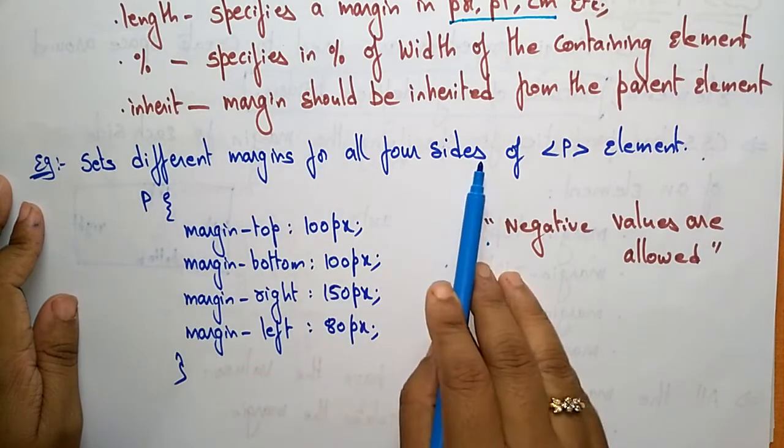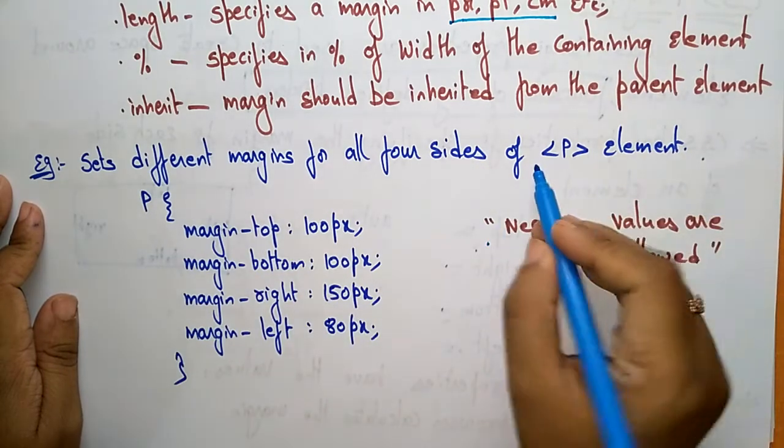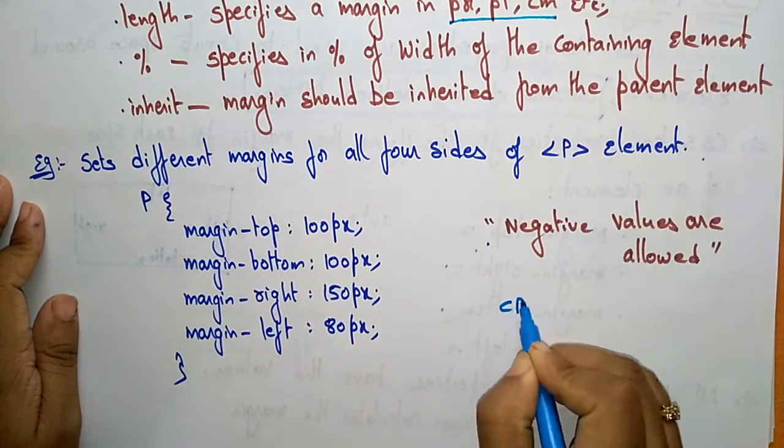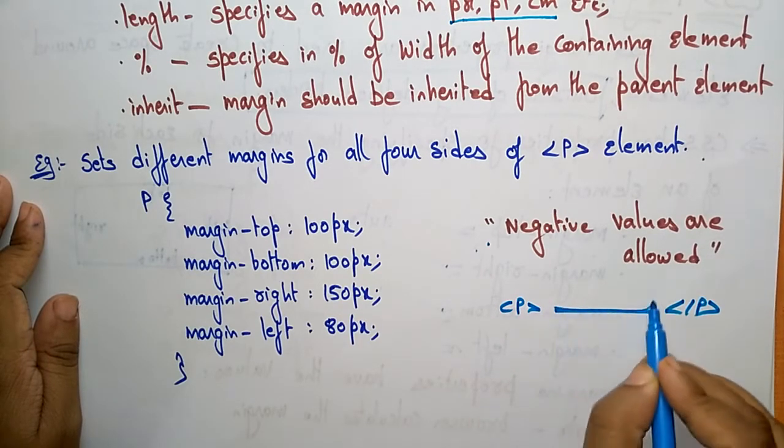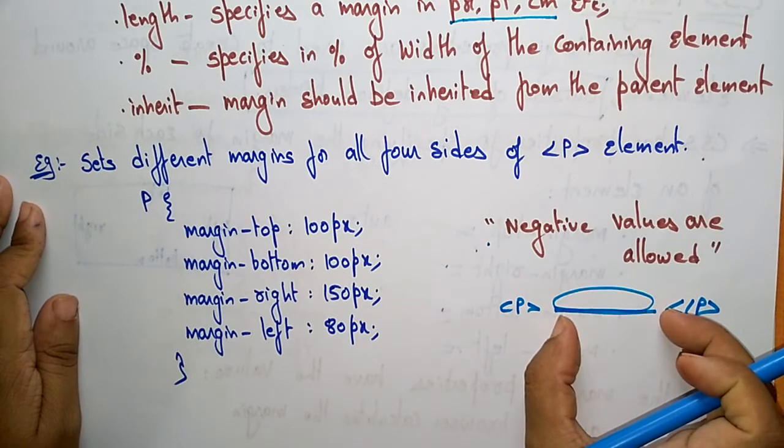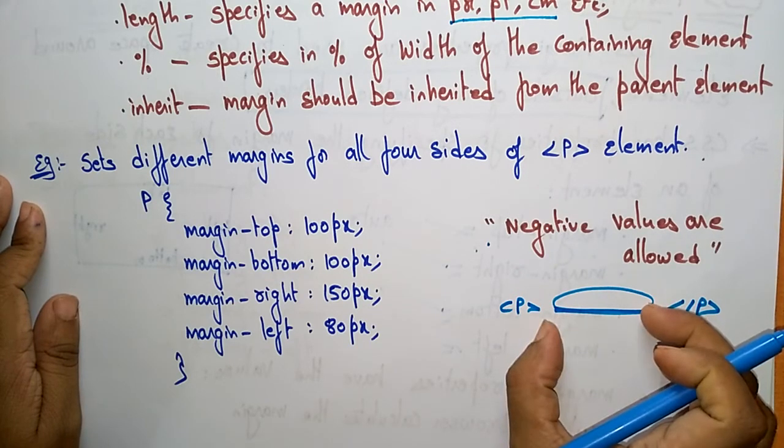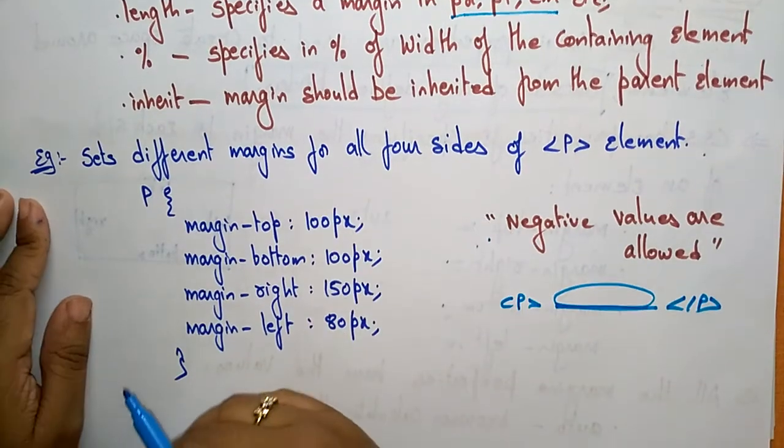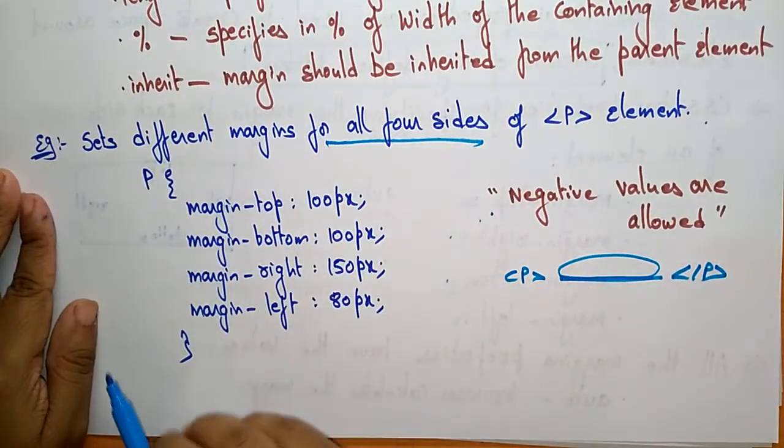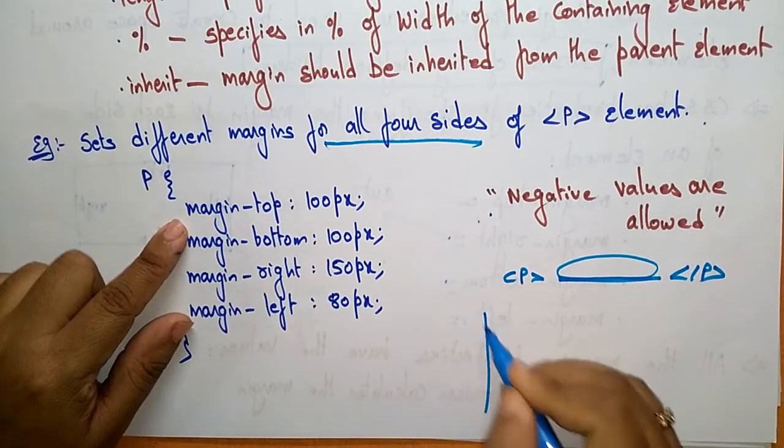Let's take an example: set different margins for all four sides of a paragraph element. Whatever the paragraph element is there, in between some elements are there and close the paragraph. This element, whatever the paragraph element is, has to be placed on the web page by using the margins for all four sides. Let's take this as a page.